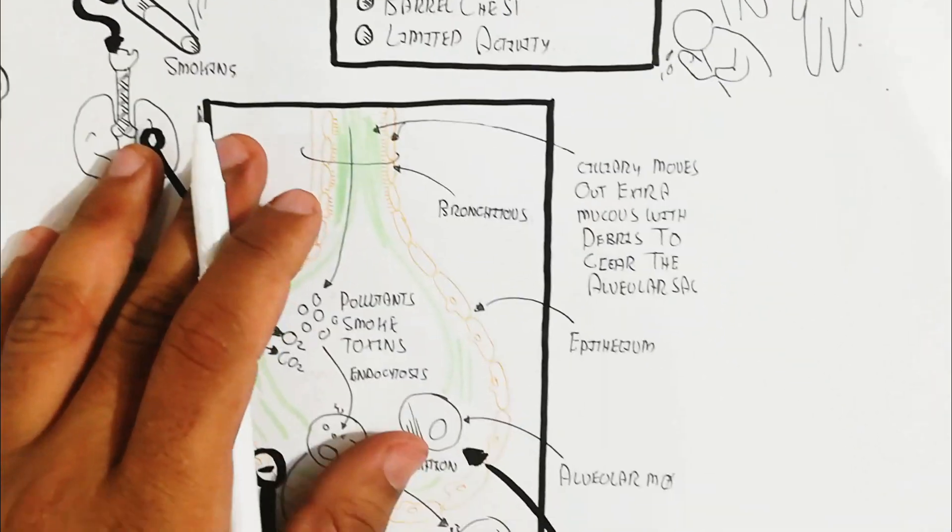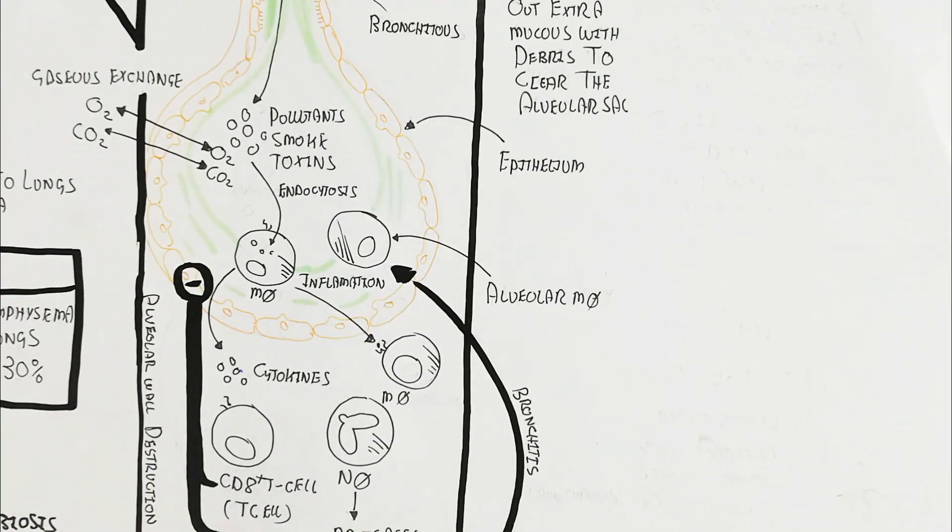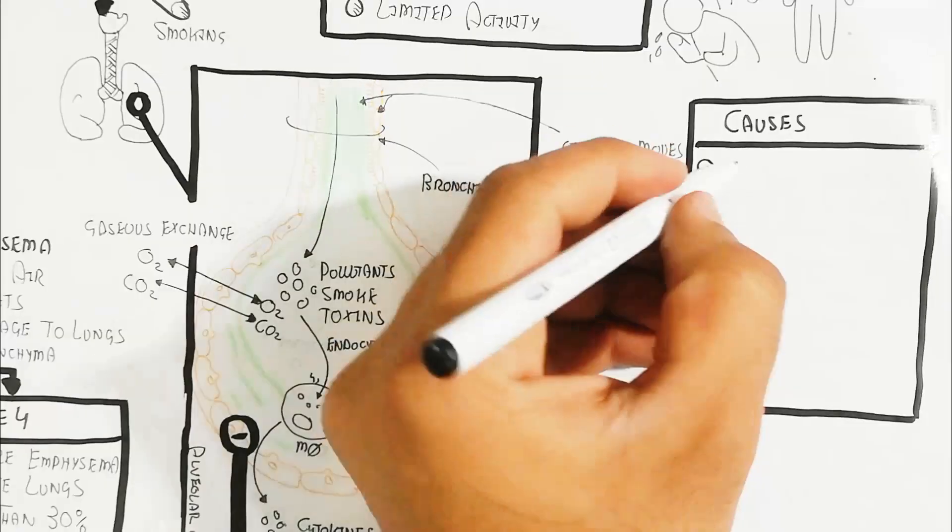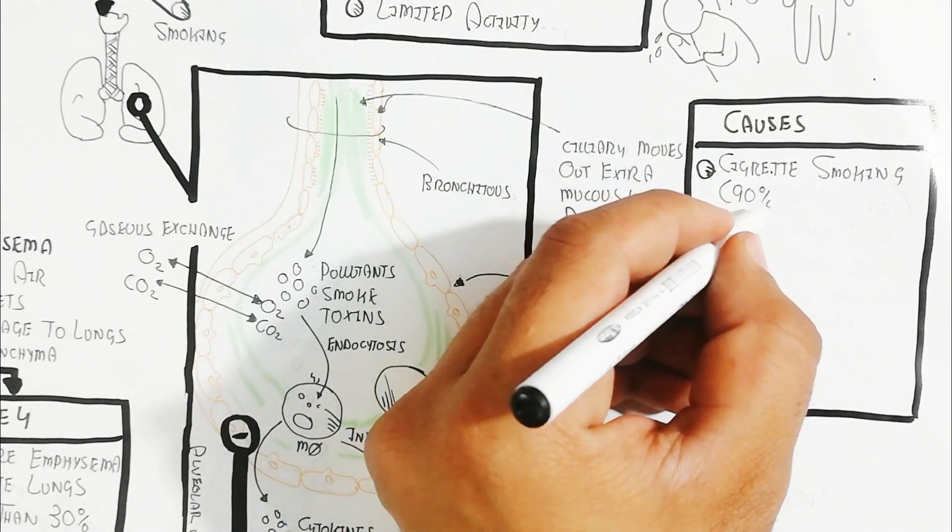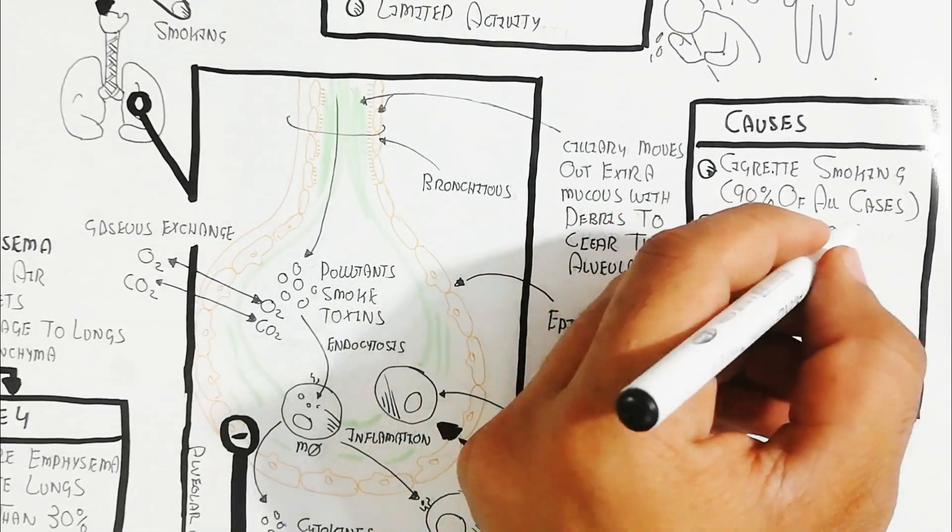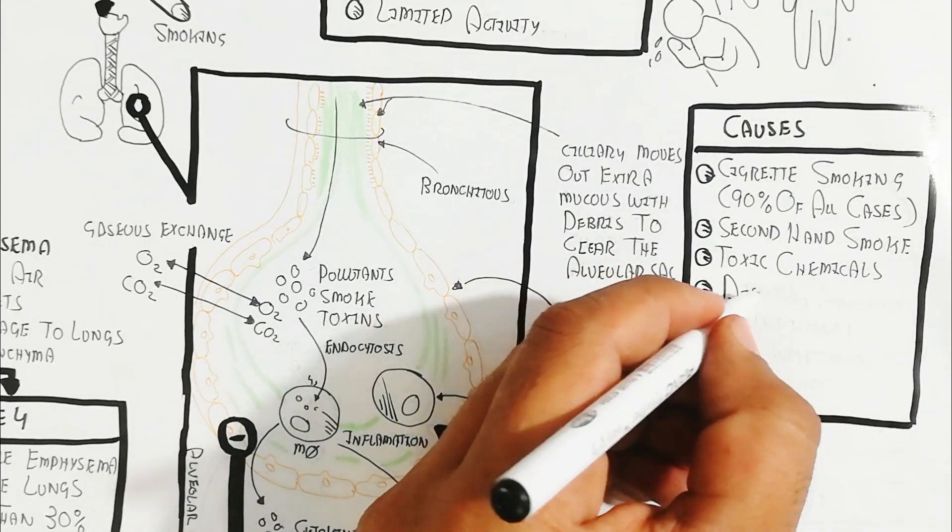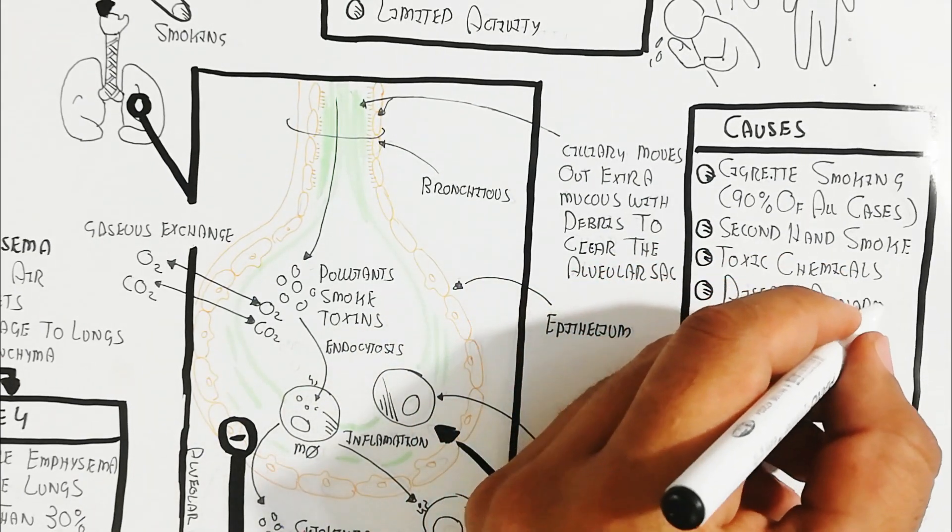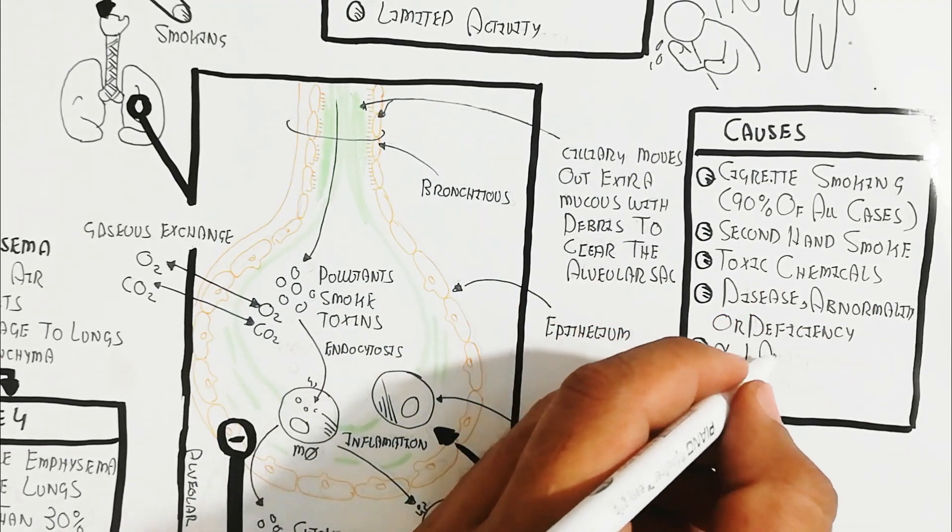Causes include cigarette smoking (90% of all cases), secondhand smoke, toxins, chemicals, and alpha-1 antitrypsin deficiency.